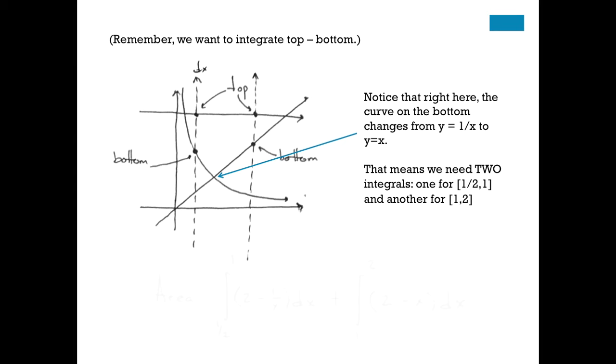Now, the area is going to be two integrals. One that goes from a half to one, where one over x is the bottom boundary. And another that goes from one to two, where x is the bottom boundary. And in both cases, two is the top boundary, so you get two minus one over x, two minus x. Both of these integrals are pretty easy integrals that I'm confident all of you could evaluate really easily at this point. So, let's talk about another option here.